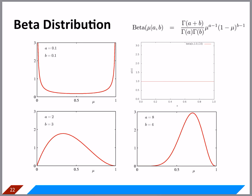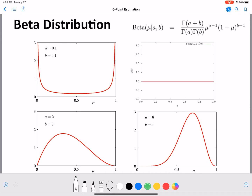If a and b are equal, the distribution will look symmetric across the mu axis. We can see that the first example is symmetric, and these others are also symmetric. For the bottom two examples, the a and b values are different — they are not equal.